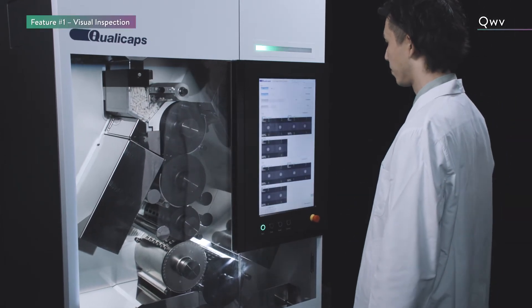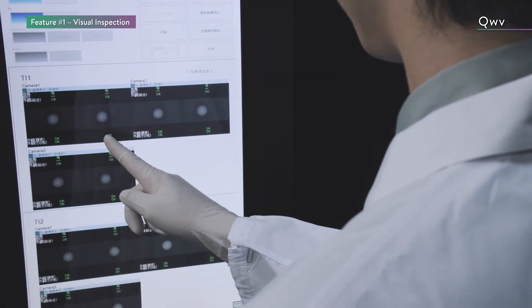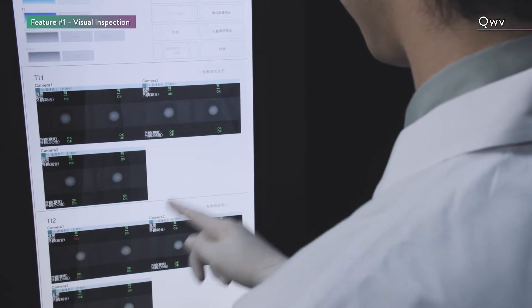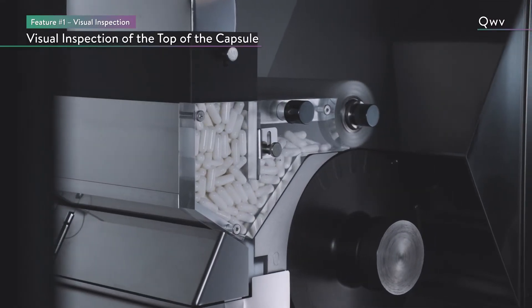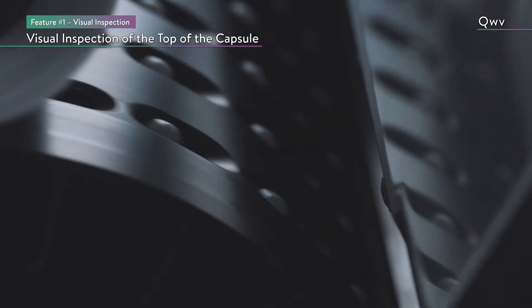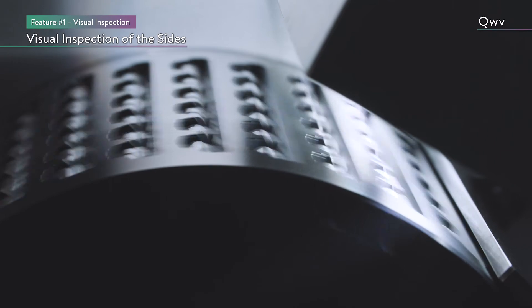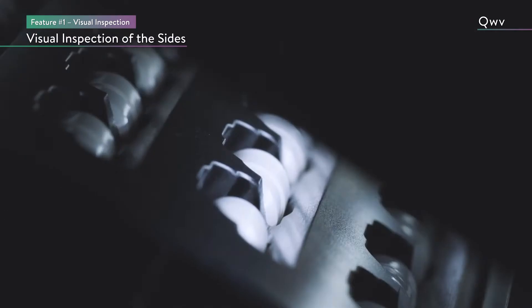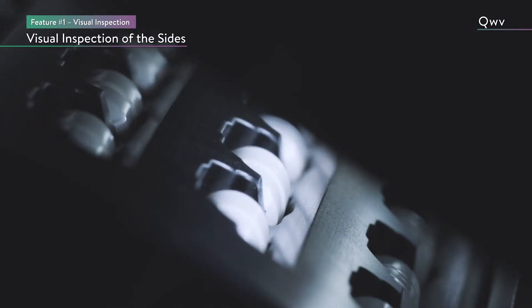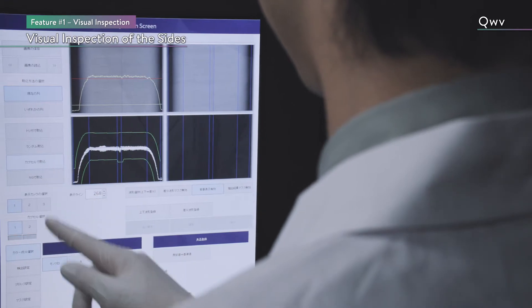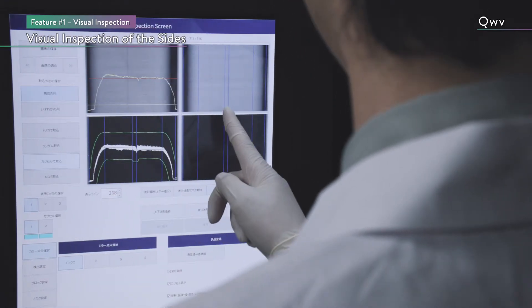The CUVE is able to inspect the entire surface of the capsule. During the visual inspection of the top of the capsule, defects are detected from the images taken by the camera. During the visual inspection of the sides, the capsules are rotated to create an image so the entire circumference can be uniformly inspected.